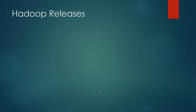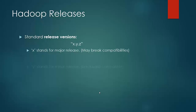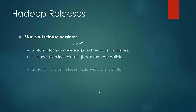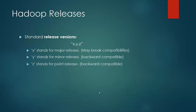Hadoop follows the standard release nomenclature denoted in the form of x.y.z, where x signifies major releases, y signifies minor releases, and z signifies point releases which may fix some bugs. A change in major release can break backward compatibility, meaning there can be features that are discontinued or implemented differently in the next release. In those cases, the code needs to be changed and recompiled.